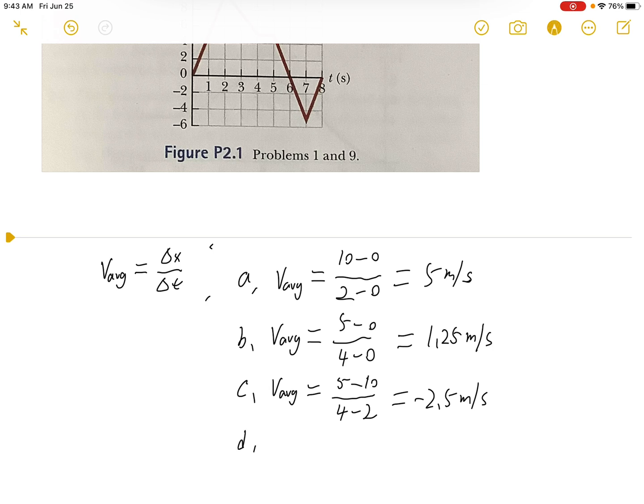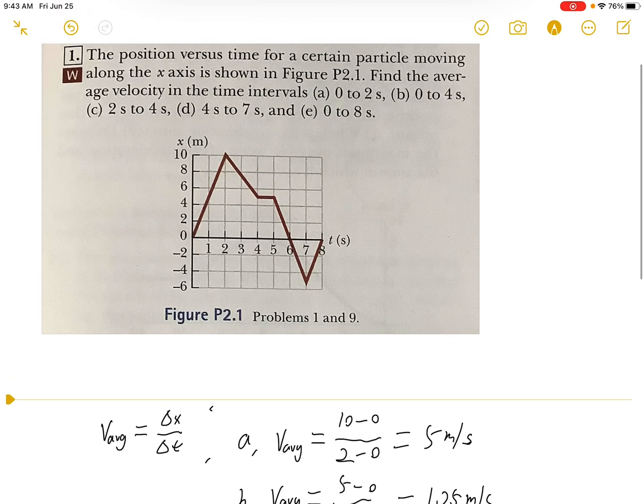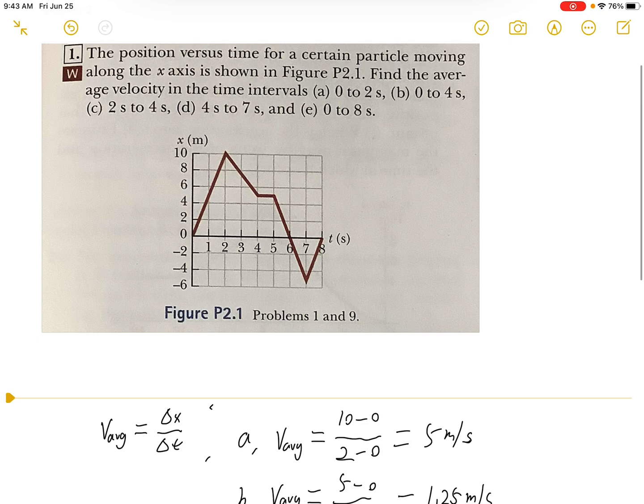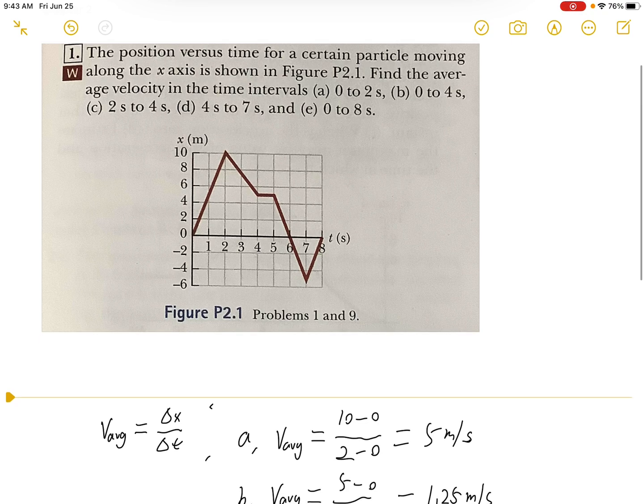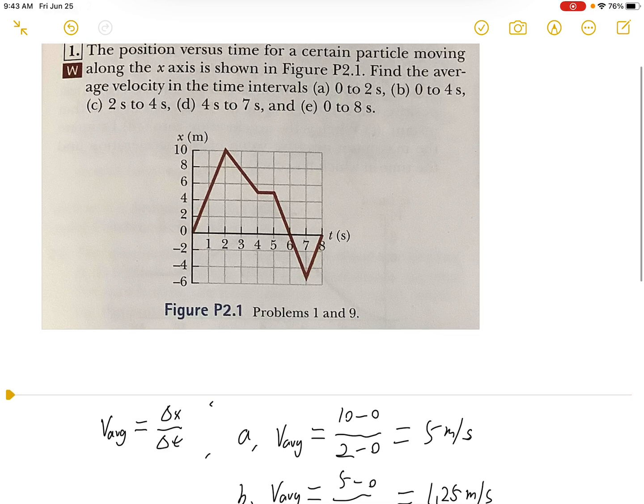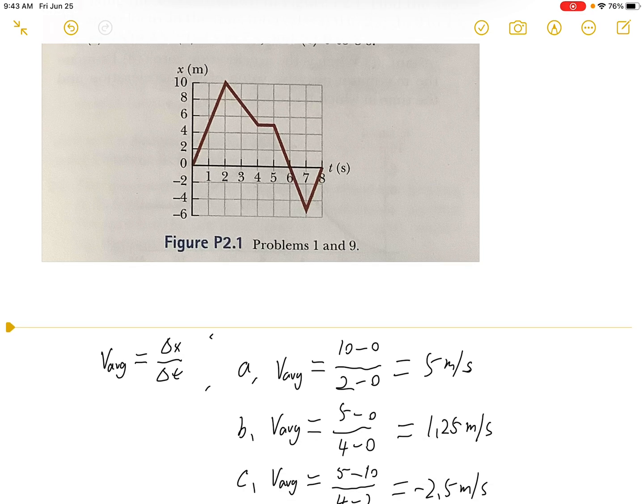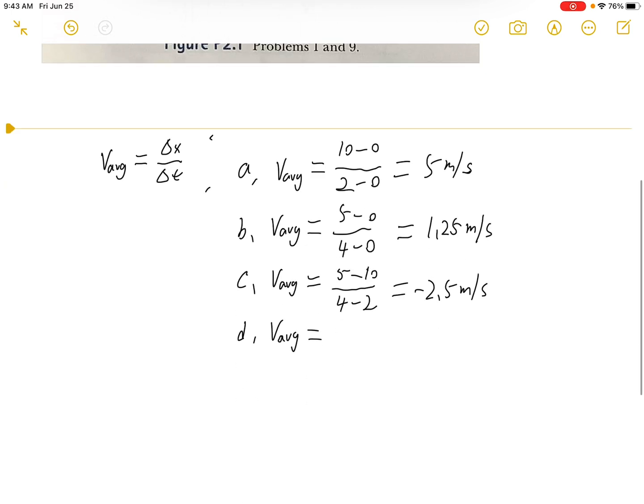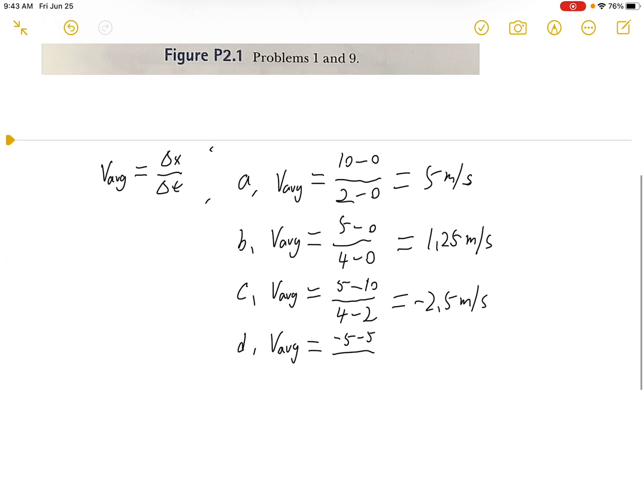For part d, from 4 seconds to 7 seconds, the average velocity equals negative 5 minus 5 over 7 minus 4. So we get approximately negative 3.33 meters per second.